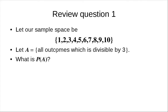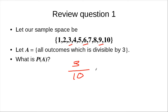Let A be an event that you get an outcome which is divisible by three. So what is P(A)? To figure that out, we need to count — we want to count the number of outcomes divisible by three, so that's three outcomes. The number of possible outcomes is ten, so P(A) = 3/10 = 0.3.